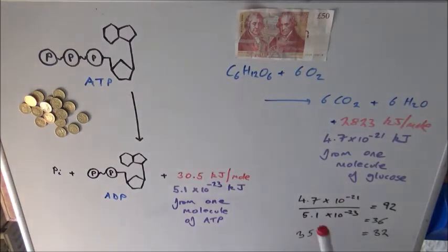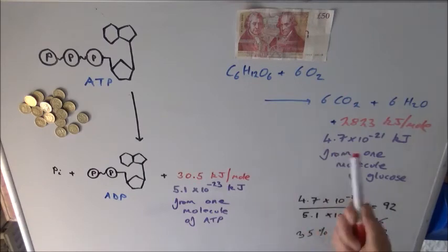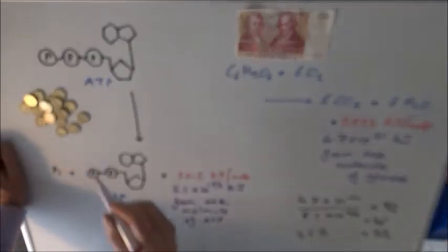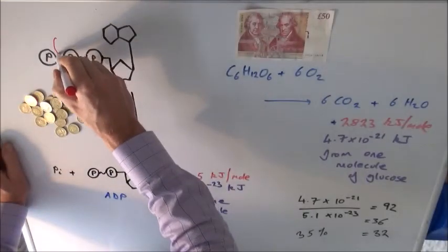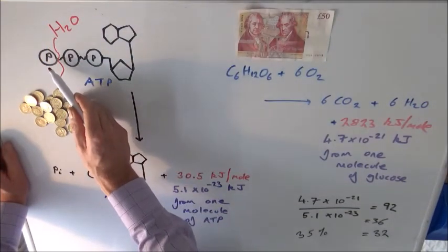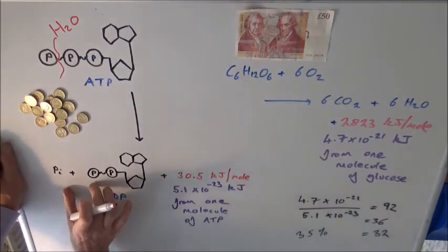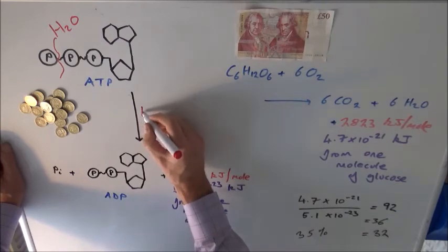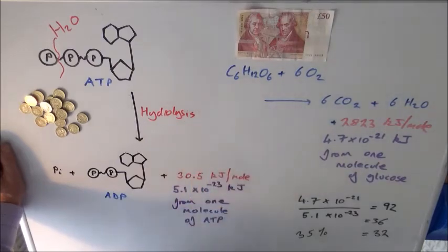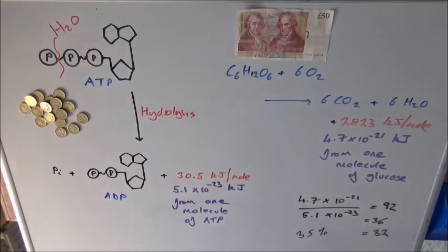You often hear about the bonds between phosphate groups as high-energy bonds — you see them written as squiggles — but that's not really accurate. There isn't really such a thing as a high-energy bond. They are chemically unstable in the sense that they can be broken easily; they have negative charges that repel each other, so they are wanting to get apart. When you break a phosphate group off ATP you release energy, but it's a hydrolysis reaction — you're adding water across the bond. The H₂O molecule is incorporated into the product, which is why it's called hydrolysis: breaking with water. That's how we get energy out of ATP.